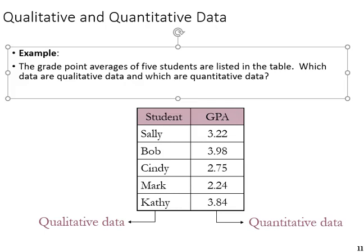In this example, we see both qualitative and quantitative data. The names of students are qualitative, their text, and the quantitative portion is the GPA for each student.